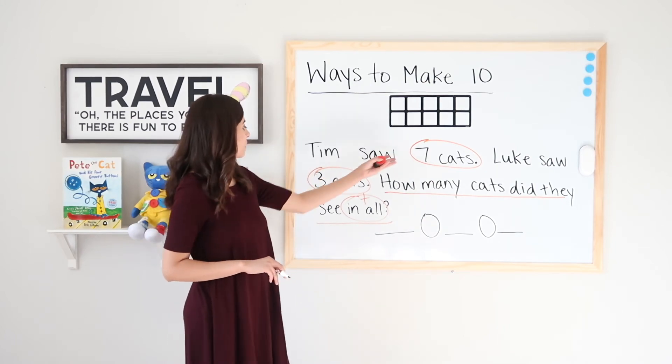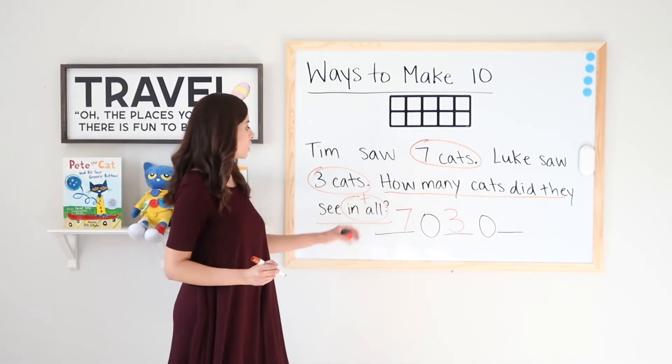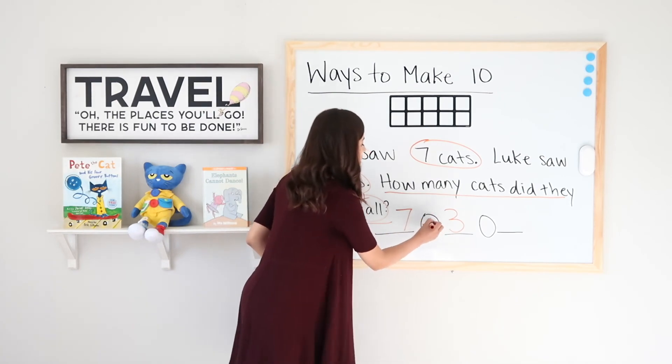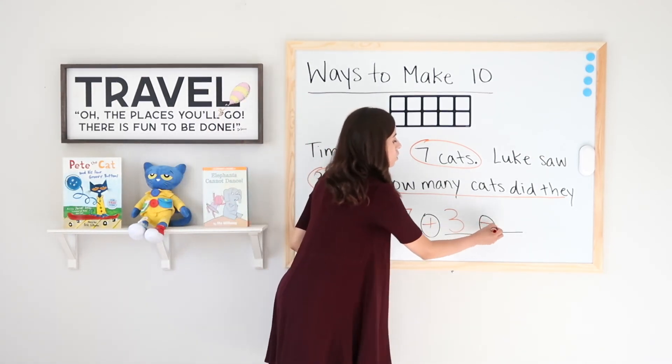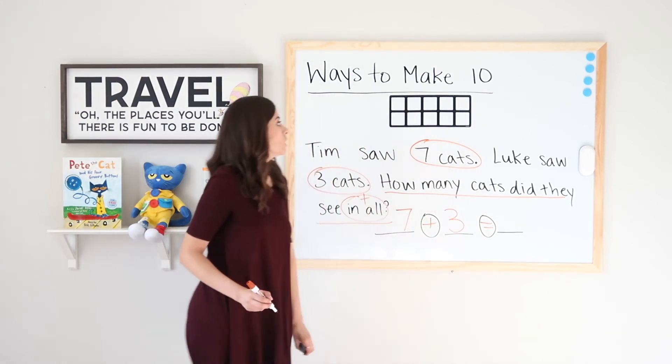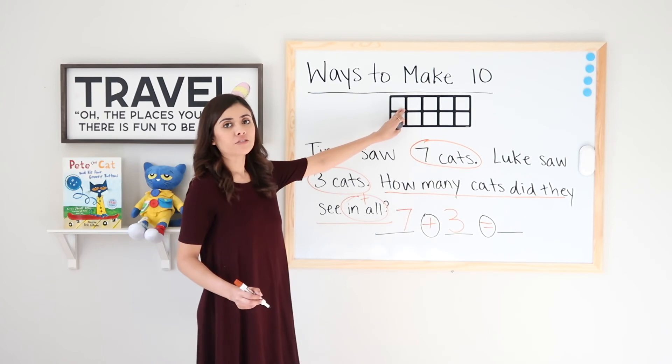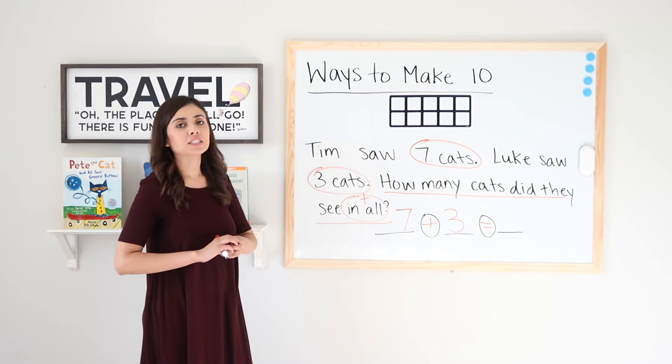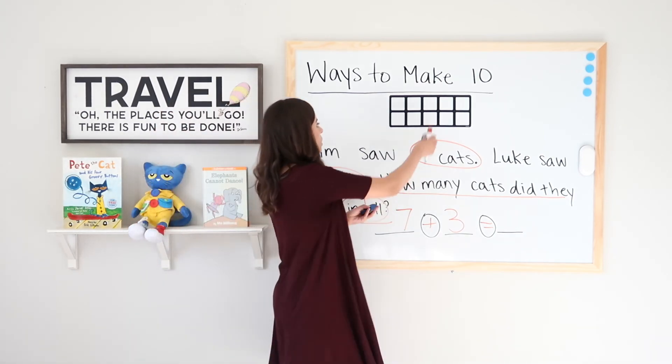So now I'm going to take my two parts and place them down below in my addition number sentence. I have seven and three. And I know that I have to add them up, right? So now I have seven plus three equals hmm. So I will start by placing seven blue dots in my ten frame and then add three more. I will count them all up after to see how many I have in all.